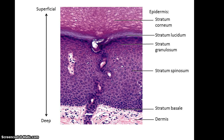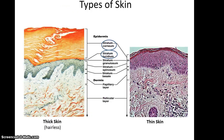Here is another image from a slide showing the various layers of the epidermis. And here is a picture of the thick skin on the left, where you see it has an extremely large stratum corneum and a very small, thin stratum lucidum, versus on the right, the thin skin, which does not have a stratum lucidum and its stratum corneum is relatively small and thin.